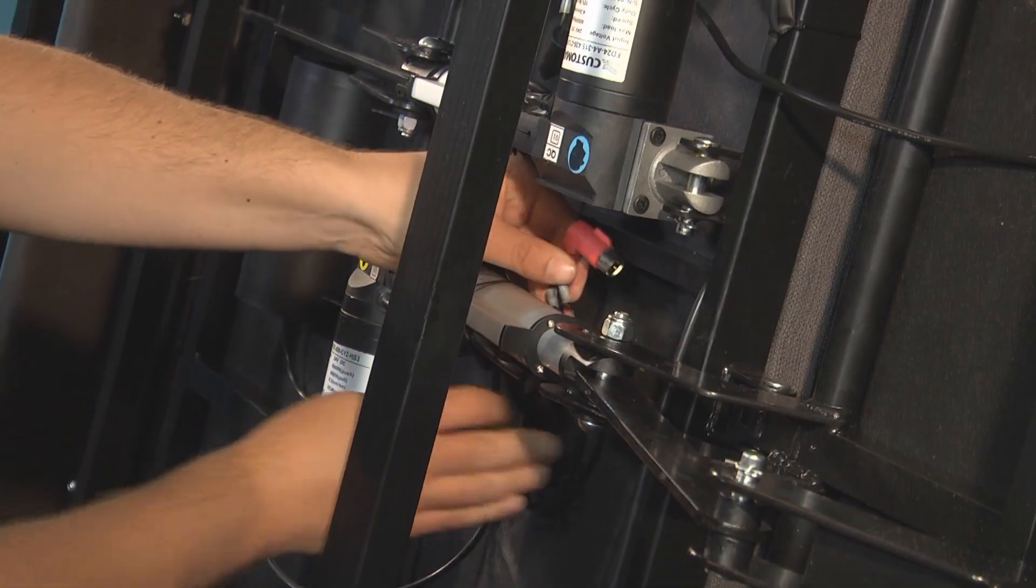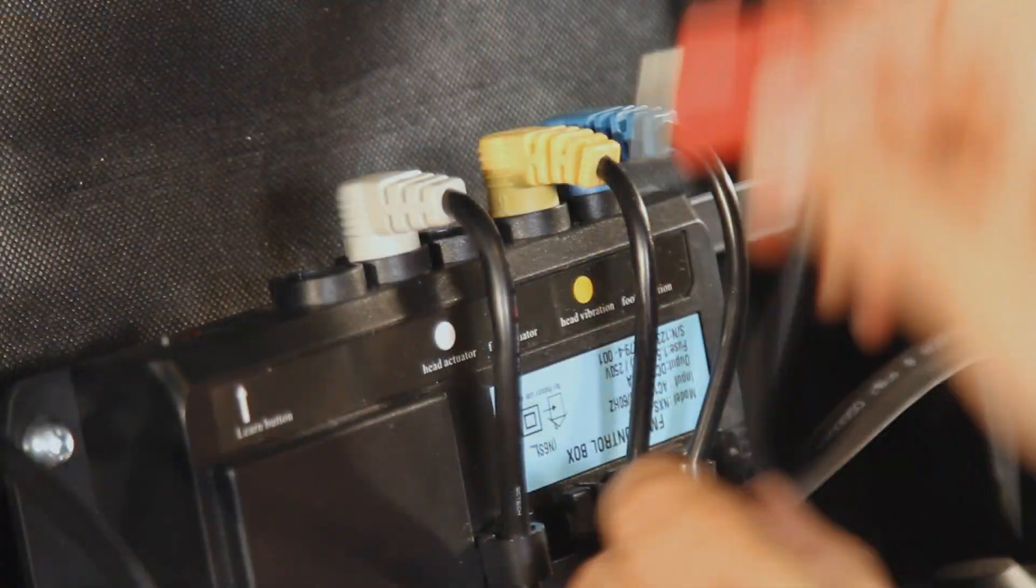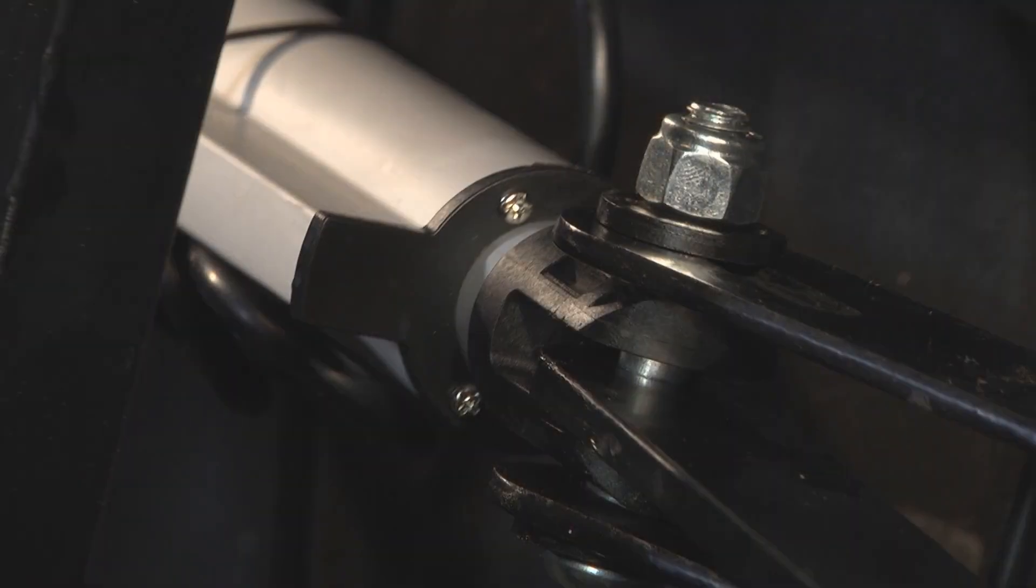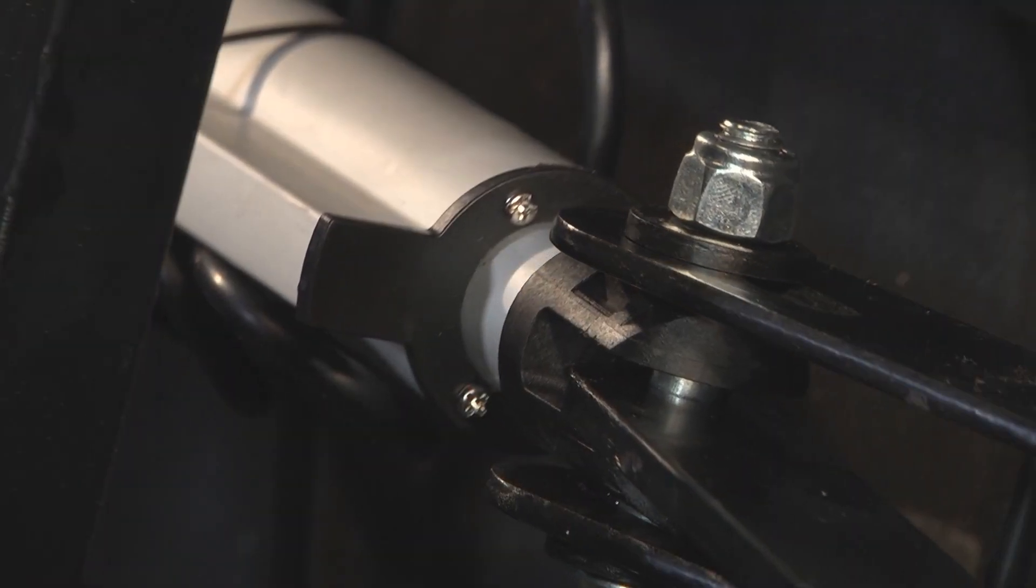Now you can plug the new actuator's electrical connector back into the control box and plug the base into the wall and then test the unit to make sure the new actuator is working.